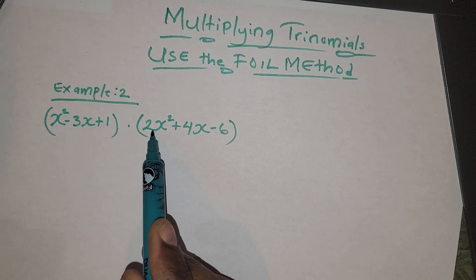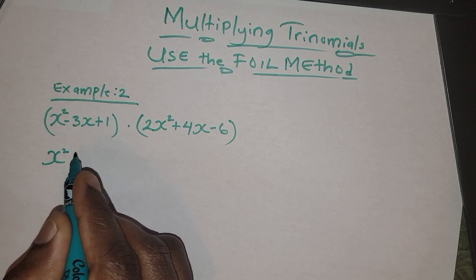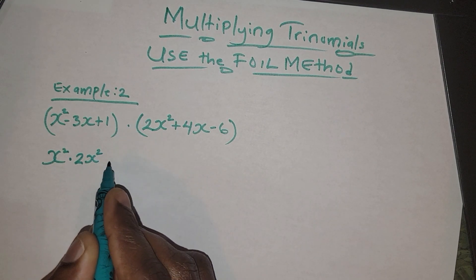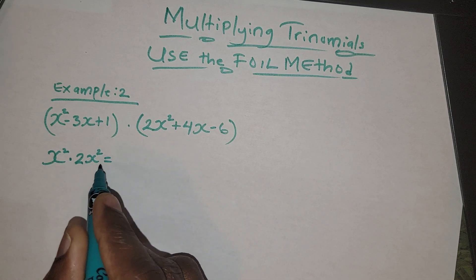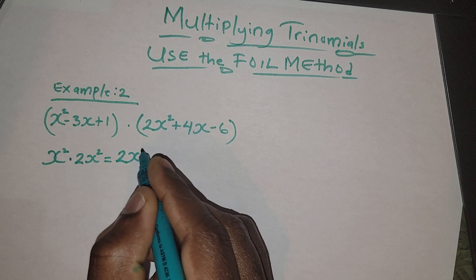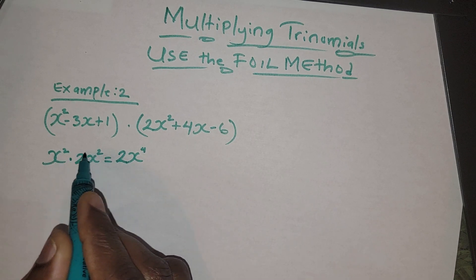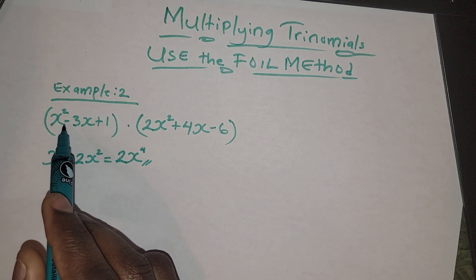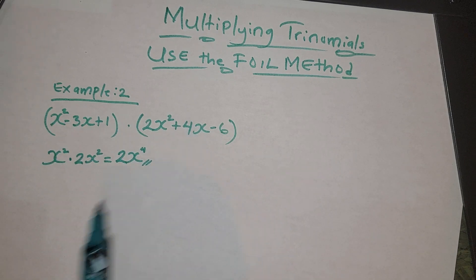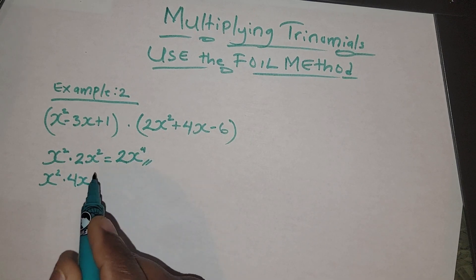First, we want to multiply x² by 2x². x² times 2x² is going to equal 2x to the fourth power. We get the fourth power because we add the exponents — that's how we derive the fourth power.